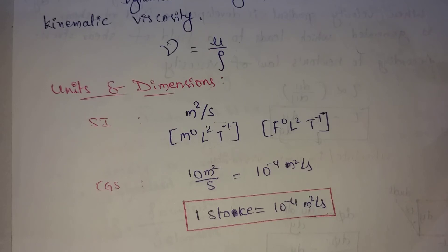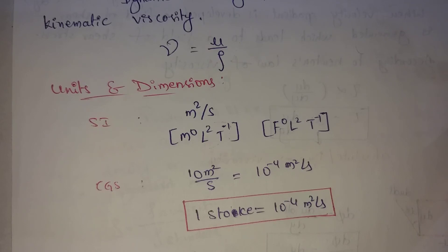What is kinematic viscosity at 20 degrees? The kinematic viscosity of air at 20 degrees is approximately 15 into 10 power minus 6 m² per second. The kinematic viscosity of water at 20 degrees is approximately 1 into 10 power minus 6 m² per second.